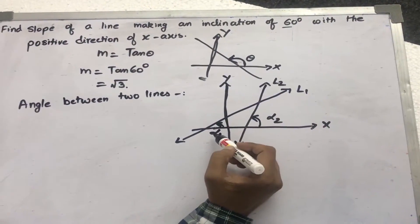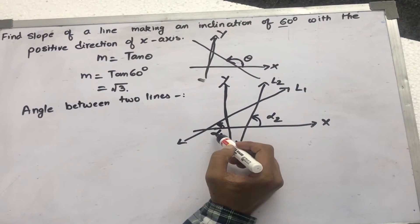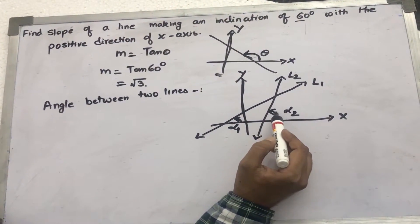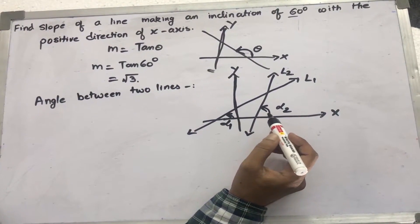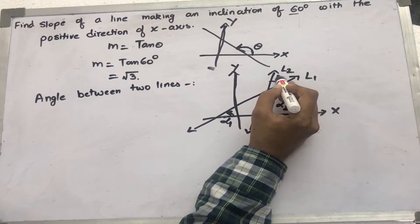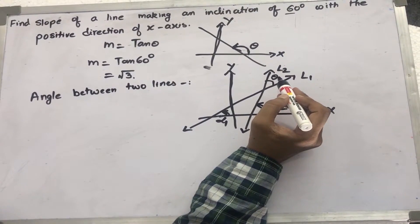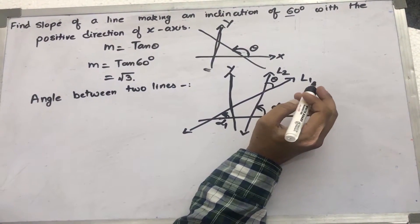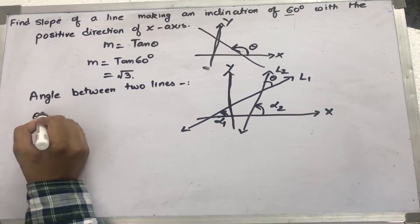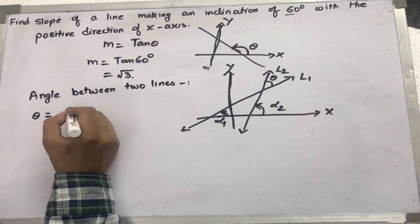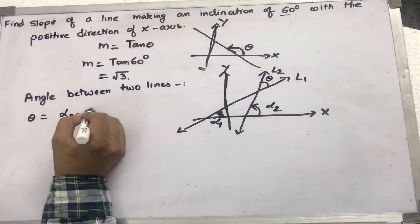So line L1 makes an angle alpha 1 with the x-axis, line L2 makes an angle alpha 2 with the x-axis. Now, let theta be the angle between them. The definition says that theta is equal to alpha 2 minus alpha 1.